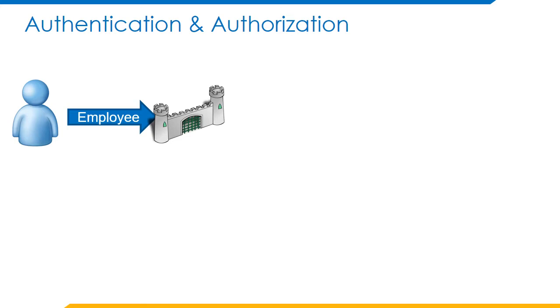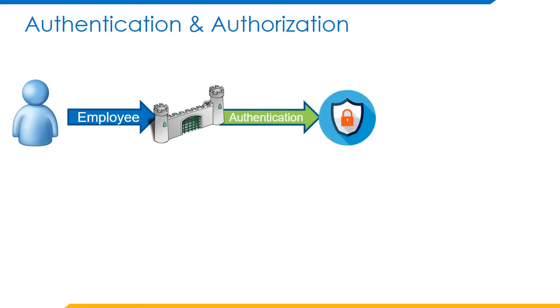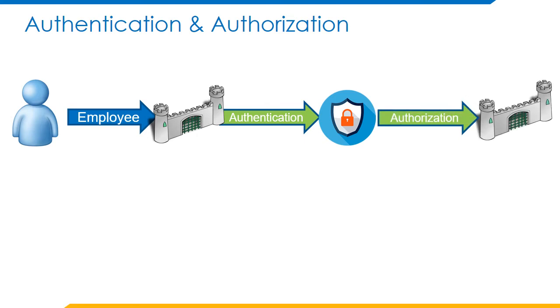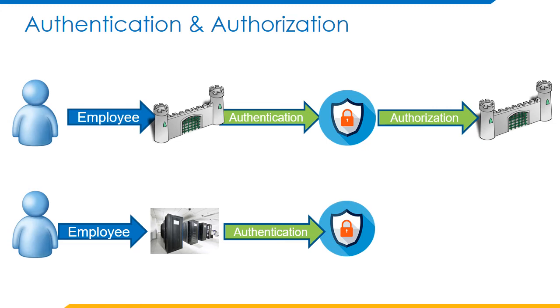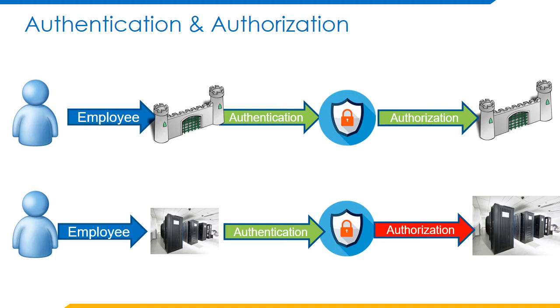Let's discuss a case where we can understand the difference between authentication and authorization. Consider an employee in an organization who has access to enter into a project room, but the same employee is restricted from entering into the server room. When the employee swipes his access card at the project room, he is authenticated as an identity and he is authorized to enter because he has access to it. Similarly, when the same employee swipes his access card at the server room, he is authenticated as the respective identity, but he is not authorized because he does not have access to enter. So he is restricted. Hence, authentication is verifying the identity of a person and authorization is verifying the access assigned to that particular identity.